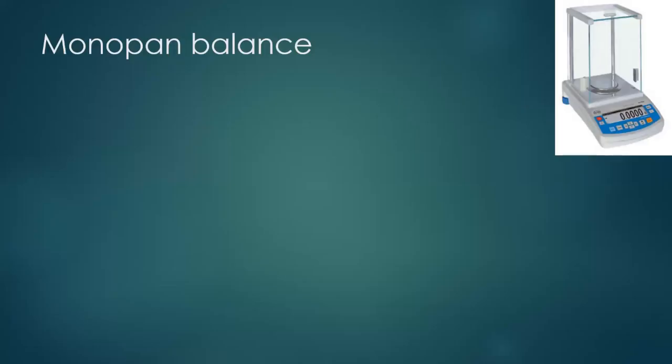The monopan balance is the type we routinely use because it offers two very important advantages. First, it provides high accuracy in the sub-milligram range — we can go up to picogram. Second, being an electronic device, the weights are changed by an electromagnetic setup, giving us the advantage of going very low in terms of weight. Also, in terms of time, weighing is very easy — you place the substance and it immediately reads the weight. This reduces the time required for preparation of reagents, making monopan balance highly advantageous over analytical balances.